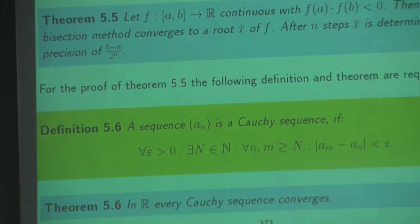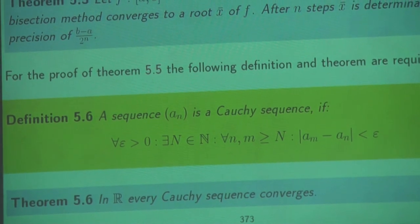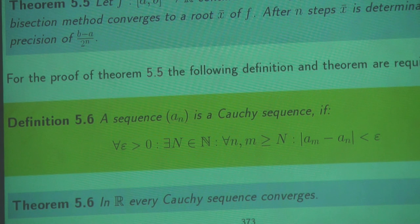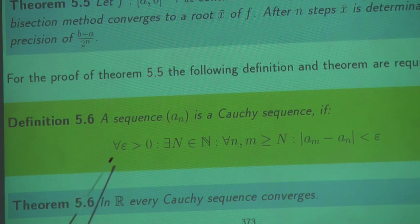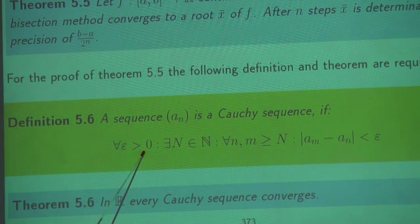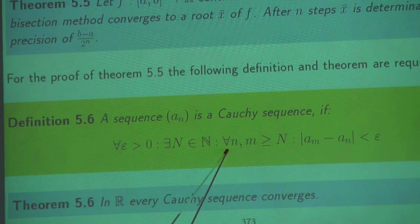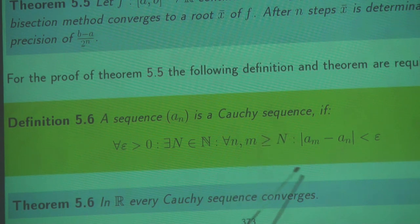Let's look into the definition of a Cauchy sequence — we will need this for the Banach fixed point theorem later. A sequence a_n is called a Cauchy sequence if for all epsilon greater than zero, there exists an N such that for all n and m greater than or equal to this capital N, the absolute value of a_m minus a_n is smaller than epsilon.